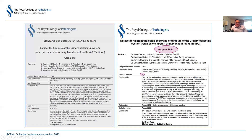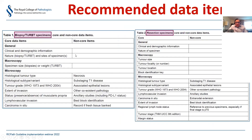This dataset is version number three, published in August 2021, building on the previous dataset from 2013, which was lead-authored by Jonathan Shanks. As in the previous dataset, we have separate sets of core and non-core data items for biopsies and TURBT specimens on one side, and resection specimens on the other.